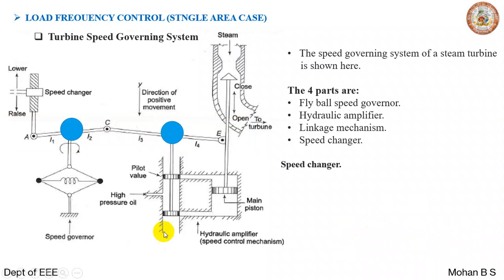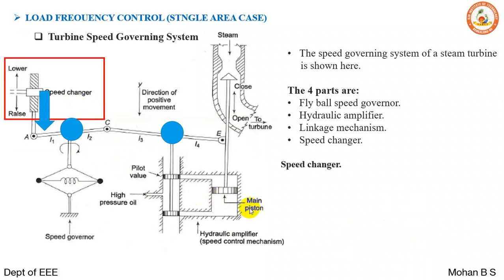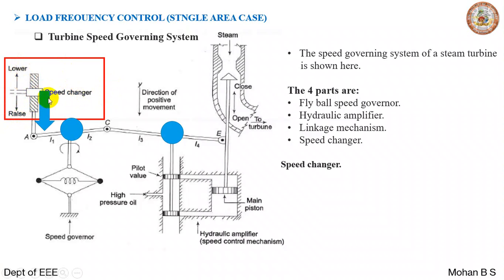Now for the speed changer: suppose there is a requirement to increase the speed due to low frequency and high load — momentarily the speed reduces, and we must increase it back. So the condition is that the frequency is lower, and therefore we must increase it by increasing the speed of the prime mover. The speed changer provides the mechanism to raise or lower the speed setting accordingly.